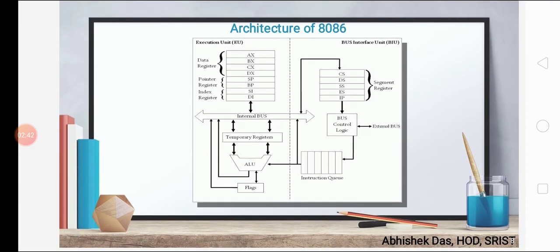This is the architecture of 8086. In this architecture we can see it is divided into two parts — one is the execution unit and one is the bus interface unit. In the execution unit, all the register parts and flag registers are present. In the bus interface unit, we have the segment register and instruction queue. Now we are going to discuss the detail about these two parts.